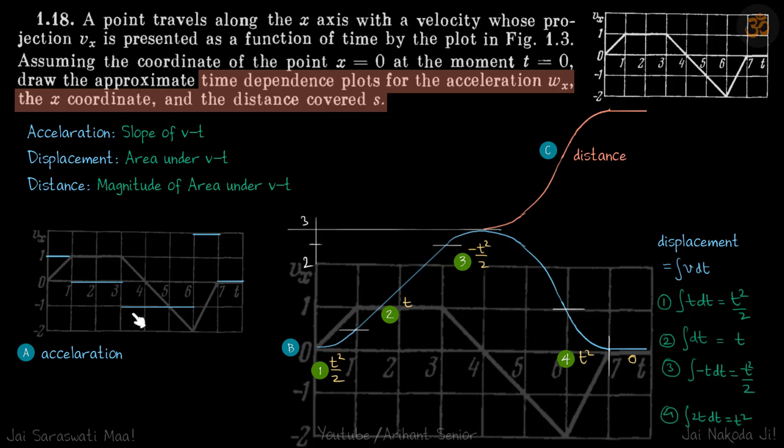Here the slope is minus 1, so acceleration is minus 1. Here the slope is plus 2, gaining 2 meters per second in 1 second, so acceleration is plus 2. Then the velocity becomes 0 and is constant, so acceleration is also 0. This is the acceleration graph.